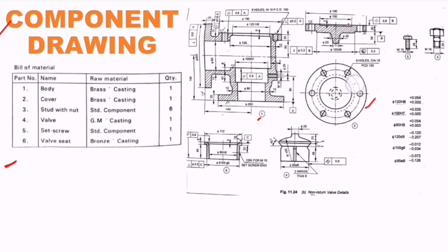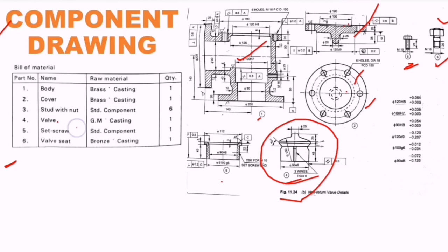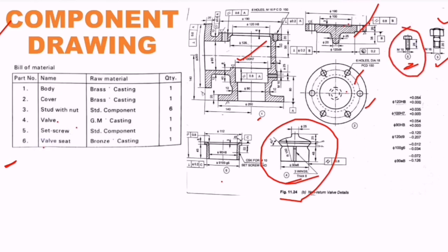Out of the six parts: this is the first part (body), this is the second part (cover) with front view and top view, this is the fifth part, this is the third part (stud with nut), this is the sixth part (valve seat), and this is the fourth part (valve). The fifth part is the set screw and the sixth is the valve seat.